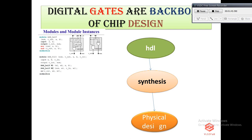A netlist can be flat or hierarchical. A flat netlist contains only one module with all the information, whereas a hierarchical netlist contains a number of modules that are called by one top module. Once synthesis is complete, we move to physical design, where we map all the gates to a standard cell library.